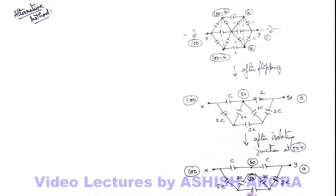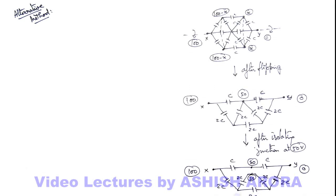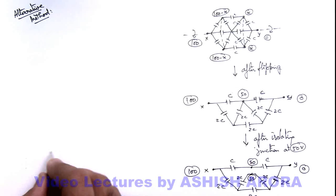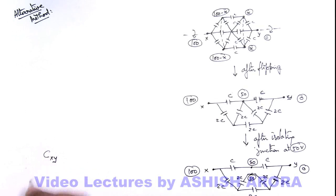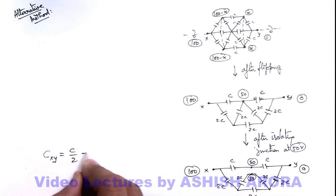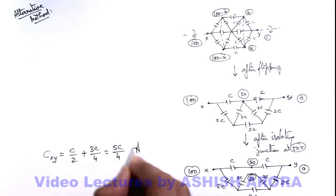By rearranging the circuit to this form, we can find the equivalent capacitance across X and Y using series and parallel combinations. The upper two capacitors C in series give C/2. The lower 2C and 2C in series give C, and C in parallel with 2C gives 3C. Then 2C and 2C in series give C, and C in series with 3C gives 3C/4. Finally, C/2 in parallel with 3C/4 equals 5C/4, confirming the answer.